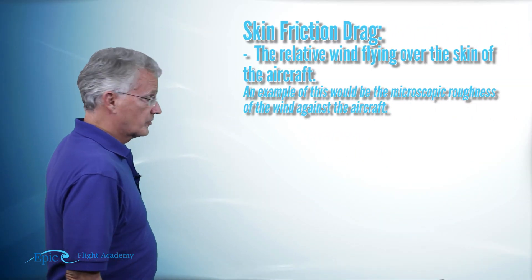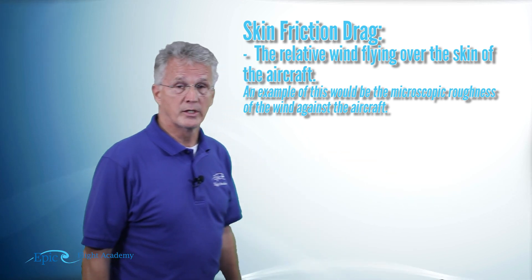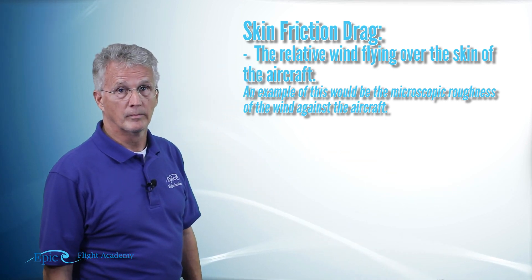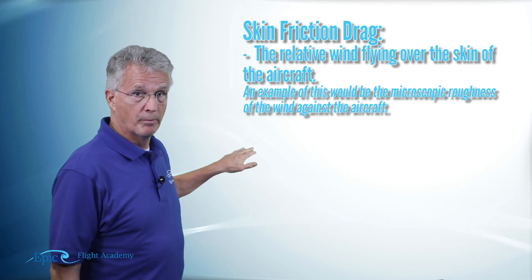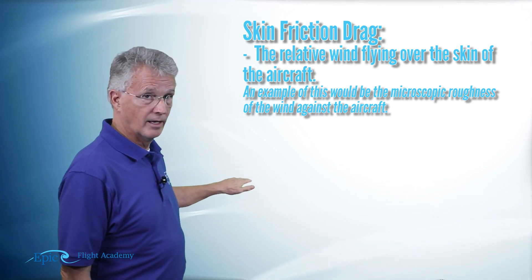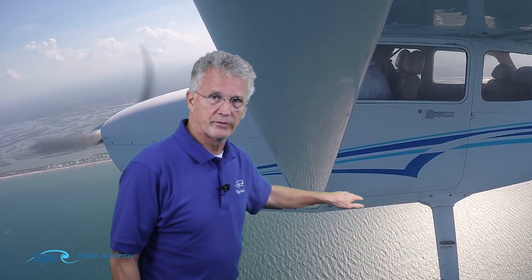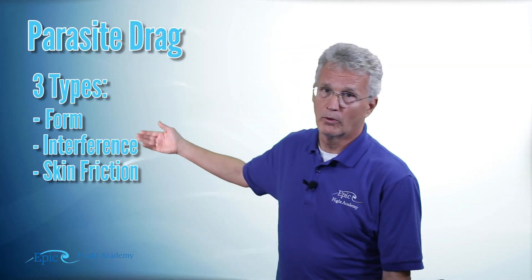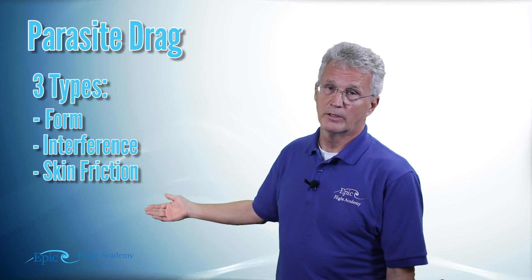The third type of parasite drag is skin friction drag. This is really just the relative wind flowing over the skin of the airplane. We can't see it with our naked eye, but at a microscopic level there's a surface roughness in the aircraft structure, and as the air flows past it, that causes drag — that's skin friction drag. So parasite drag has three types: form, interference, and skin friction.